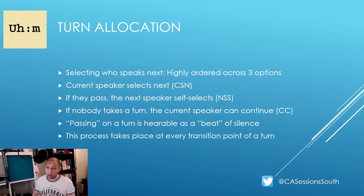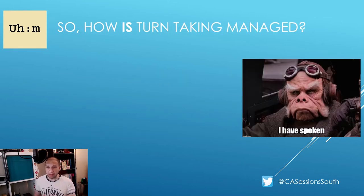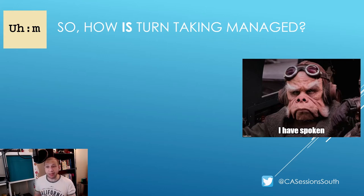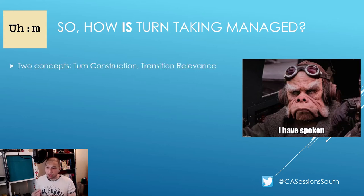It's worth noting that in conversations, this process takes place at every transition point of a turn. So, how is turn-taking managed? The short answer is that it is managed very well. We are able to carry conversations with minimal gaps and minimal overlaps, which means we must have methods to anticipate when someone's turn is likely to end — and it's not like people typically announce that they have finished speaking.